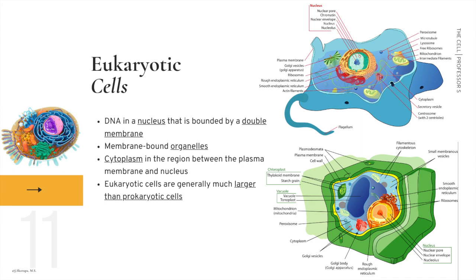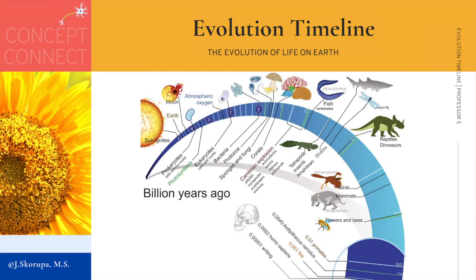Eukaryotic cells are characterized by having DNA in a nucleus bounded by a double membrane, membrane-bound organelles, and cytoplasm in the region between the plasma membrane and the nucleus. Eukaryotic cells are generally much larger than prokaryotic cells. The Earth formed around 4.6 billion years ago, and the first cells formed about a billion years later — early forms of prokaryotic life, simple cells with no organelles. Another billion years or so later, we see the emergence of eukaryotic life: more complex, larger cells that work together to create multicellular organisms.